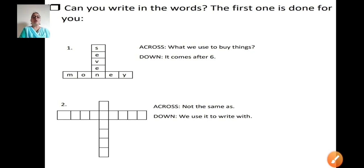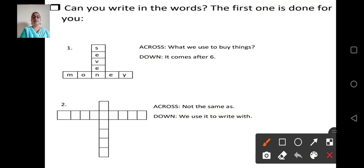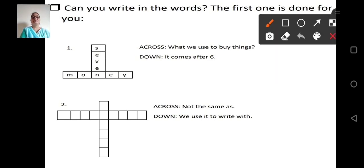What we use to buy things. This is across. So we have to see here across. So there we wrote money. We need money to buy things, isn't it? So 5 blanks are given there. M-O-N-E-Y money. So it is fitting there. And let's see the down clue. It comes after 6. It's very simple. What comes after 6? 7. So we wrote here as E-V-E-N 7. Very easy. Excited to do the next puzzles?